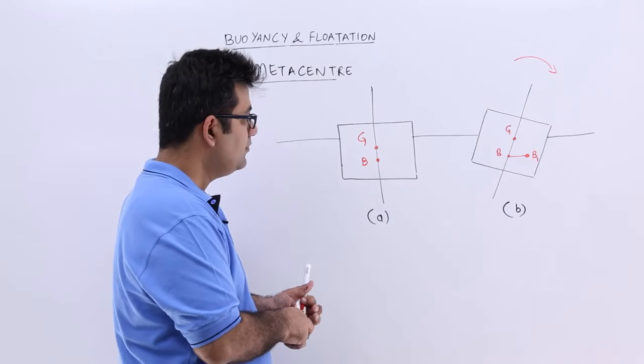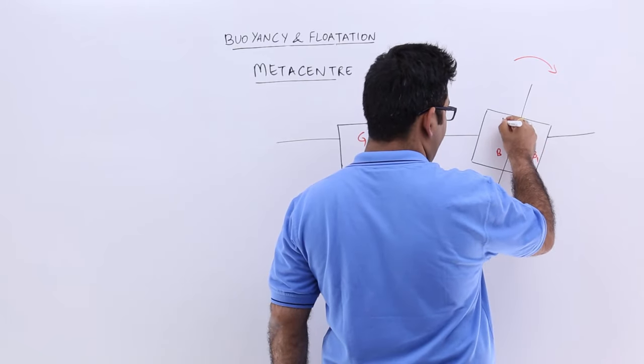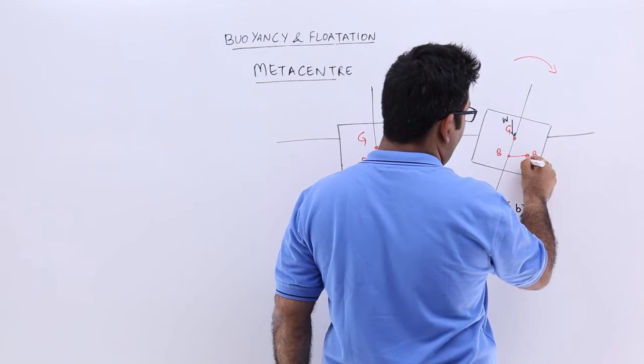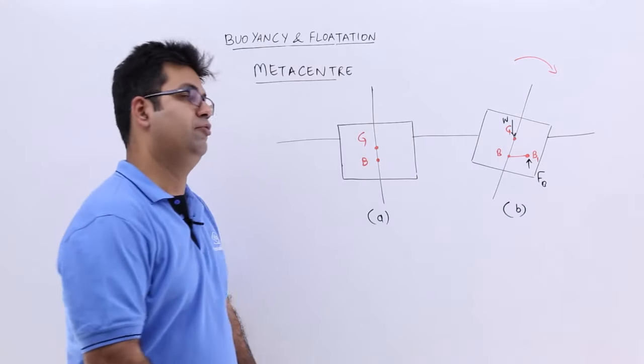This means that at G you have a vertical weight acting and at B now or B1 you will have your buoyancy force acting.